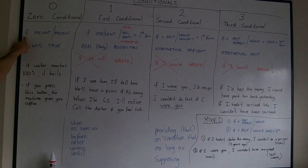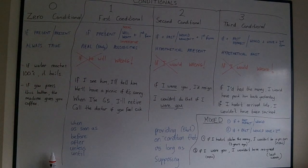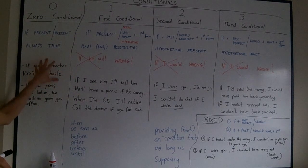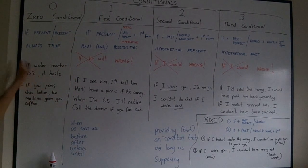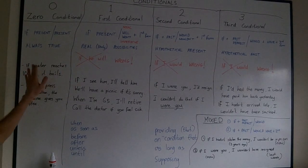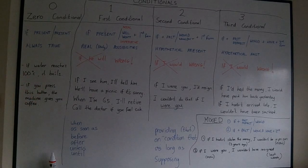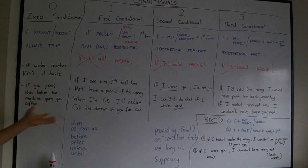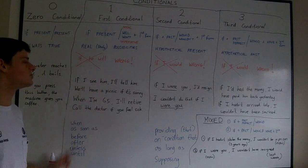So zero conditional, it always follows this formula: if present, present. It's quite easy for students, and so I haven't got any typical mistakes here. It's used for always true statements, so scientific laws. If water reaches 100 degrees Celsius, it boils. And it's also used for things which are always true, so machines always do the same thing. If you press this button, the machine gives you coffee. Always, not once, not one moment in the future, but always.